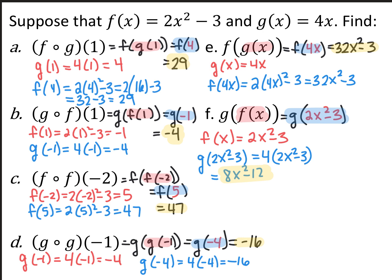g composed with g of negative 1 means g of g of negative 1. g of negative 1 is negative 4. Then I replace that and do g again — g of negative 4 is negative 16. So g composed with g of negative 1 is negative 16.